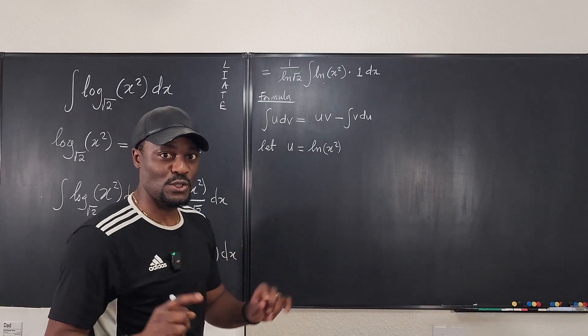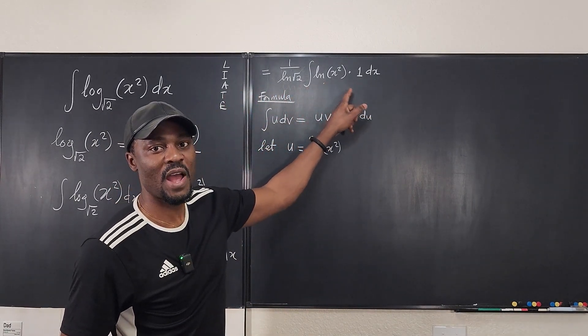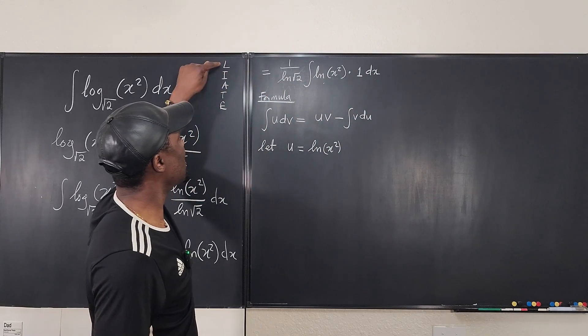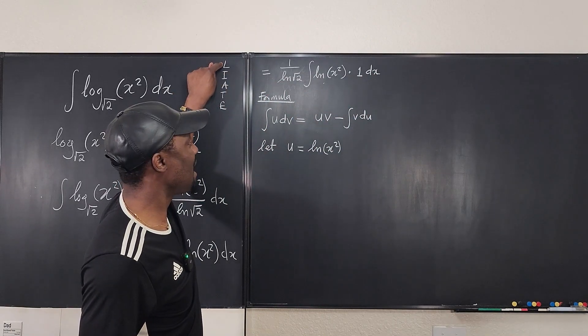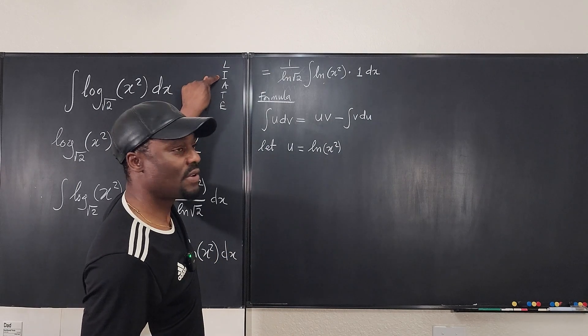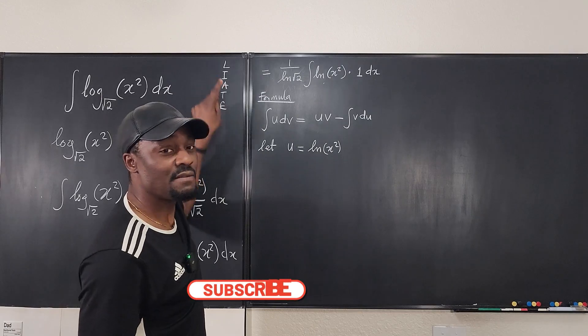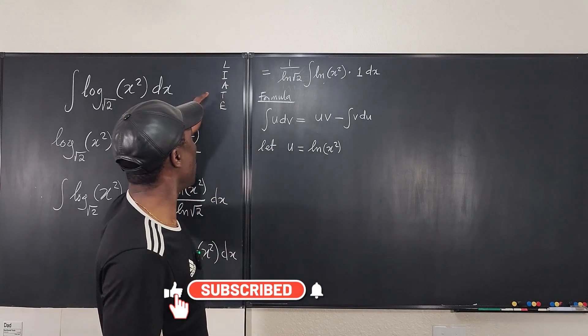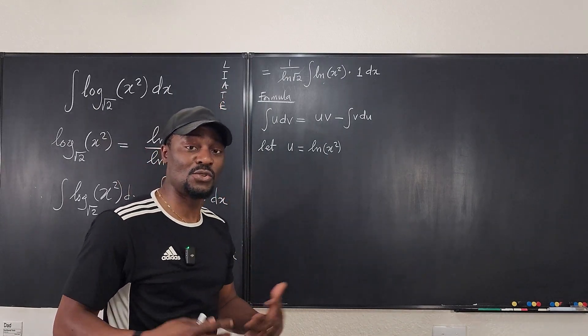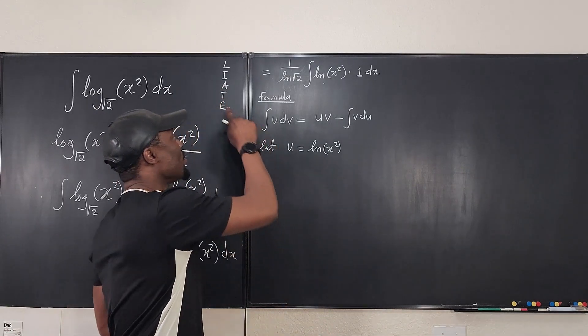Whenever you want to choose u, look at the exercise you have, or the argument of your integrand. If it contains logarithm, that must be your u. If it's not there, you go over and check if there is an inverse trig function, or you go if there's an algebraic expression like a polynomial, or you go and check if there's a trig expression, or you go.